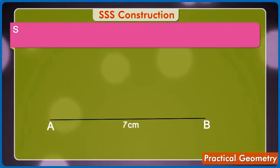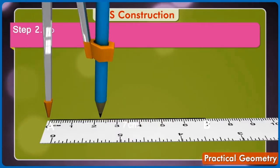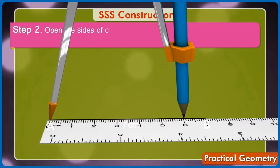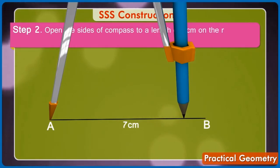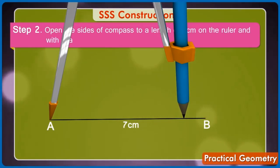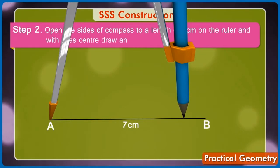Step 2: Open the sides of compass to a length of 6 cm on the ruler and with A as center draw an arc 1.